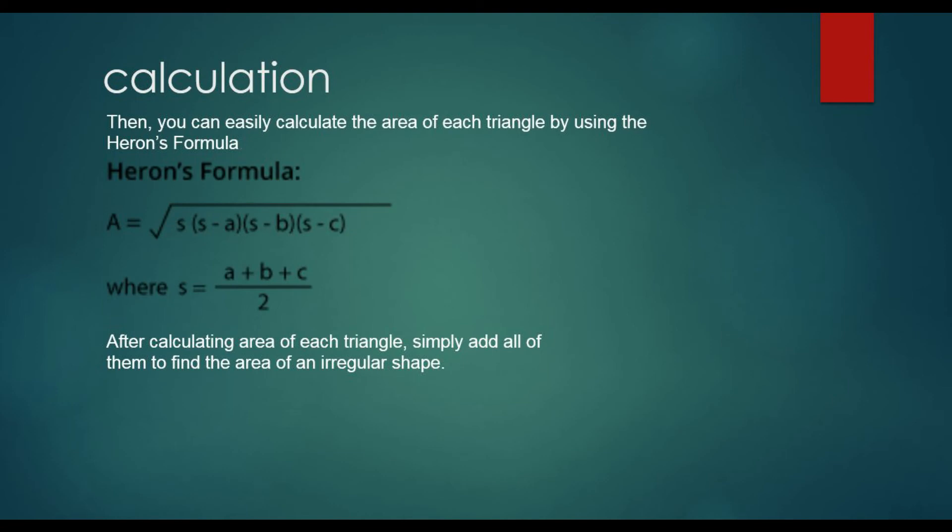Calculation. You can easily calculate the area of each triangle by using the Heron's formula. After calculating area of each triangle, simply add all of them to find the area of an irregular shape.